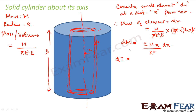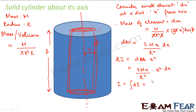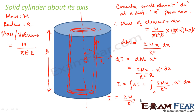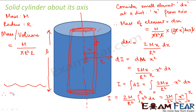The small moment of inertia associated with the small element is dI equal to dm into x squared, so dI equals 2m x divided by r squared into x squared dx. Therefore the total moment of inertia is integration of dI, equal to integration of 2m x divided by r squared into x squared dx, where x varies from 0 to r. So I equals 2m divided by r squared times the integral of x cubed dx from 0 to r, which gives 2m divided by r squared times r to the power 4 divided by 4. Therefore I is equal to m r squared divided by 2.